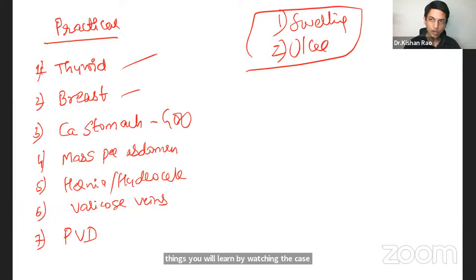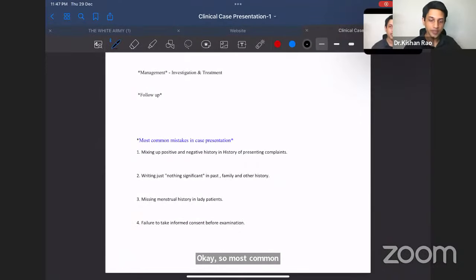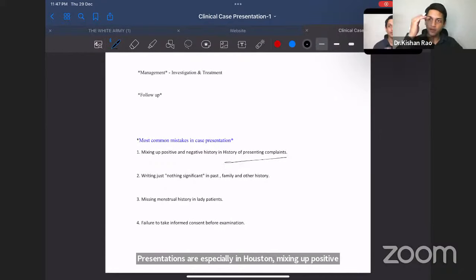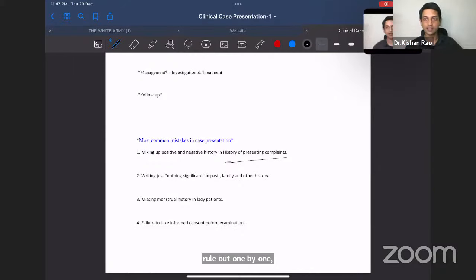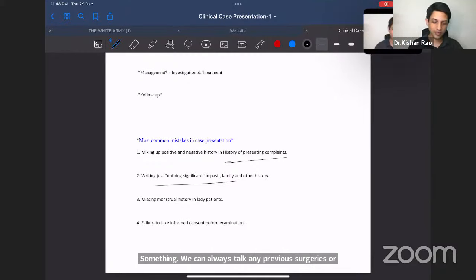Some of the common mistakes done during practicals, I would like to tell in more detail. Especially in HOPI, history of presenting illness. Mixing up positive and negative histories. No. Let's write all the positive histories first. And then, to rule out one by one, ask some negative histories. Don't mix up both. And don't write nothing significant, especially in past or family history. Don't just write nothing significant. Write something. No history of any previous surgeries or radiation or any comorbidities you can write. The family history also. Any relevant malignancies or any relevant familial conditions. All right.